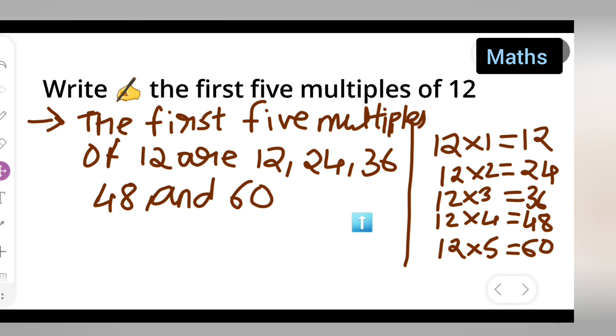1, 2, 3, 4, 5. So these are the first five multiples of 12. I hope you all have understood how to find the first five multiples of 12. Thanks for watching.